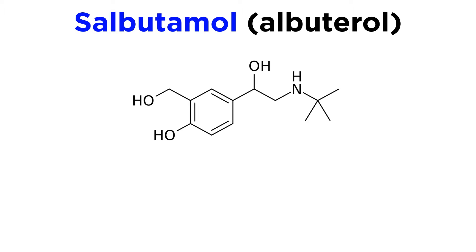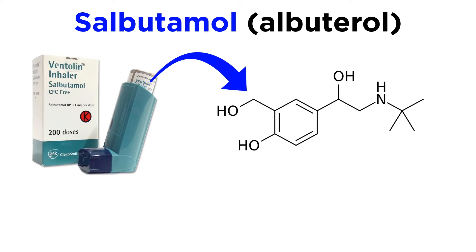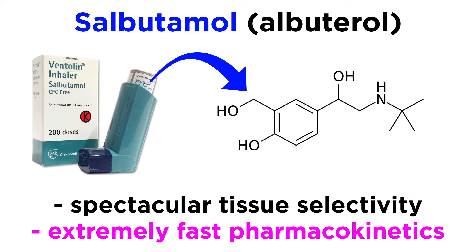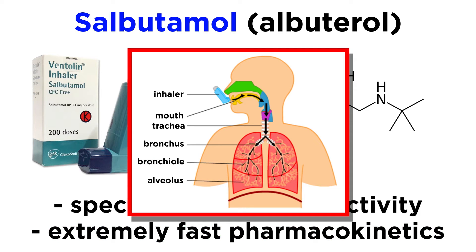Salbutamol, sometimes referred to as albuterol, is the most commonly used bronchodilator. The most common method of drug administration is inhalation through a small device called an inhaler. This offers spectacular tissue selectivity and fast pharmacokinetics, administering the drug almost exclusively to where it is needed — the vessels where airflow is impeded — and very quickly, since it does not have to travel through the bloodstream like many other drugs.